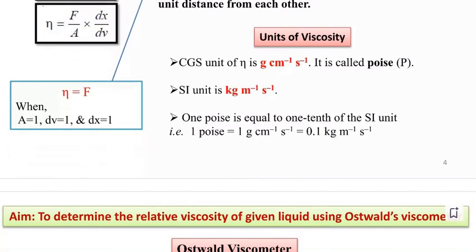Units of viscosity: CGS unit of eta is g cm⁻¹ s⁻¹, it is called poise. SI unit is kg m⁻¹ s⁻¹. One poise is equal to one-tenth of the SI unit, i.e., 1 poise equals 1 g cm⁻¹ s⁻¹ equals 0.1 kg m⁻¹ s⁻¹. When A equals 1, dV equals 1, and dX equals 1, then eta equals F.